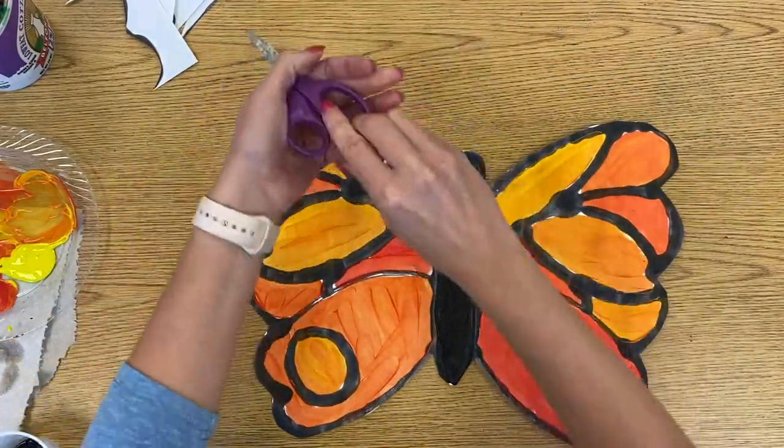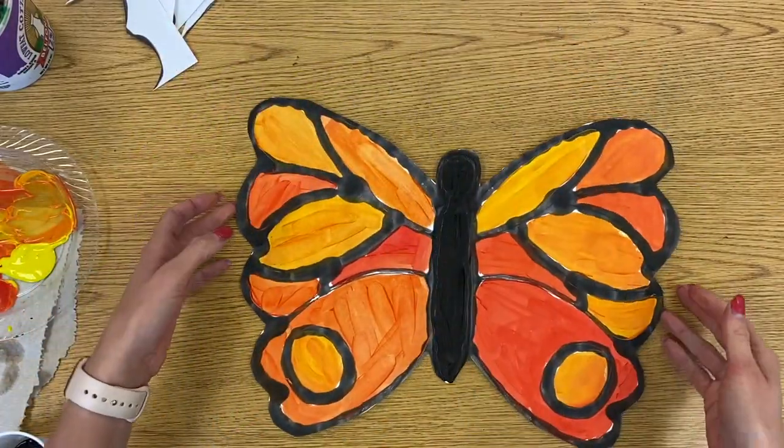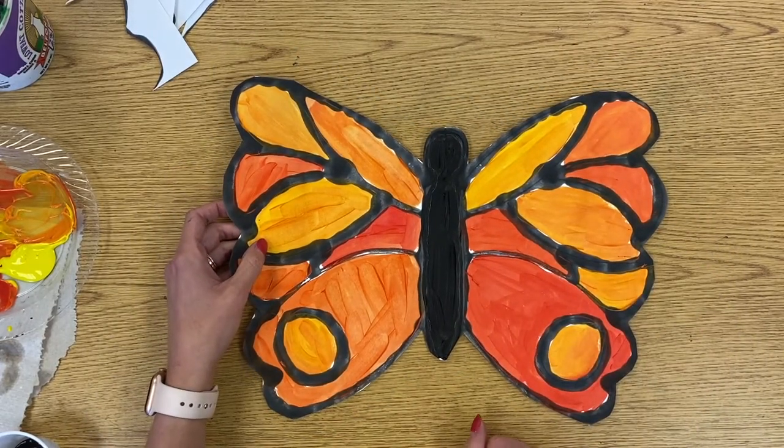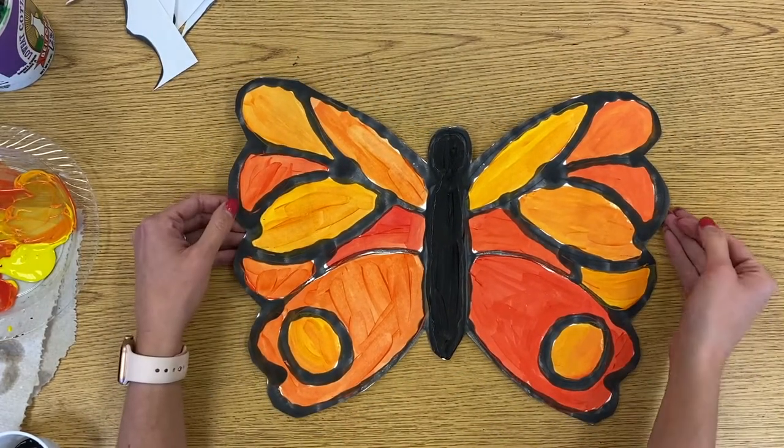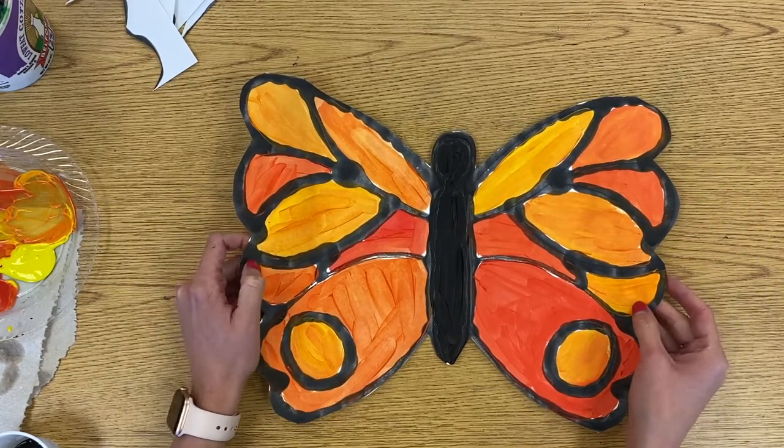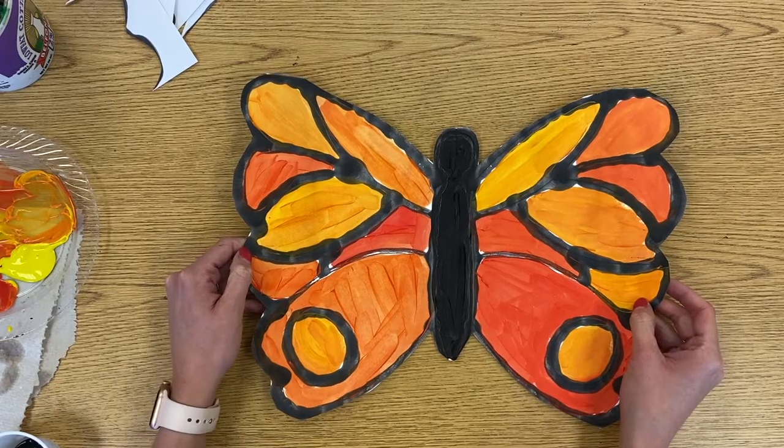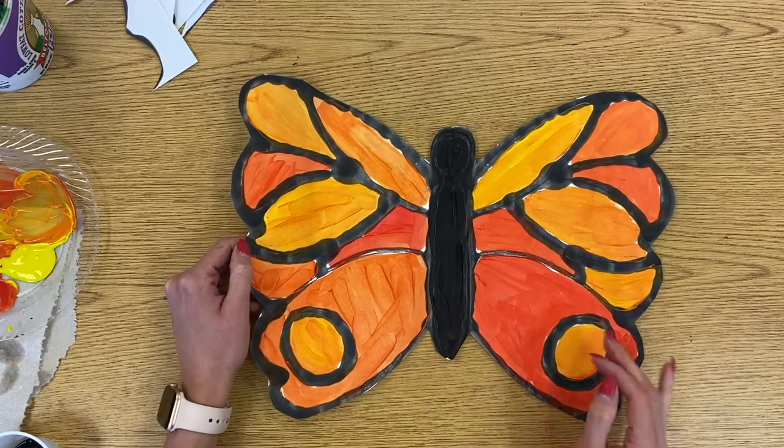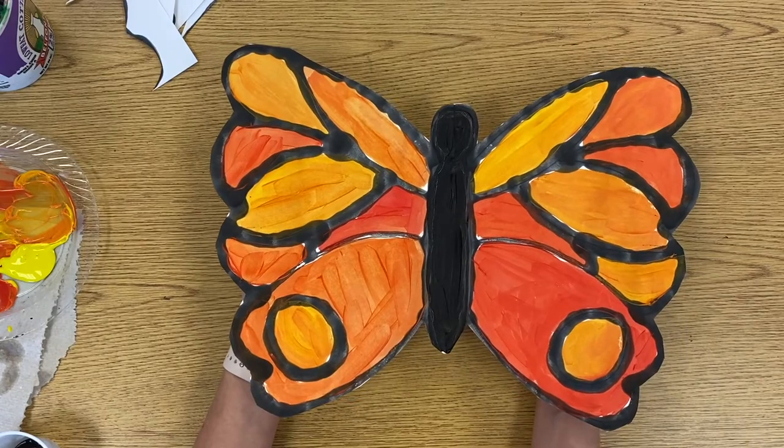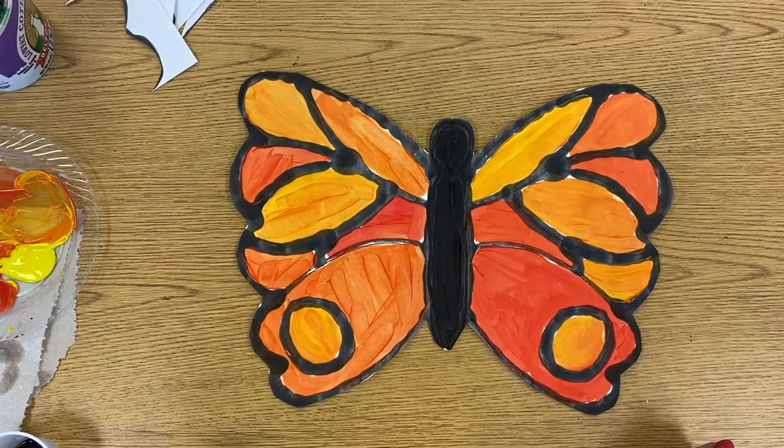All right, everybody. Well, those are our finished mariposas. We looked at monarch butterflies. We listened to the story, Senorita Mariposa. And we learned that monarch butterflies migrate to Mexico every year and they fly thousands of miles to get there. So when you're finished with your butterflies today, you can put them on the drying rack and clean up your area.